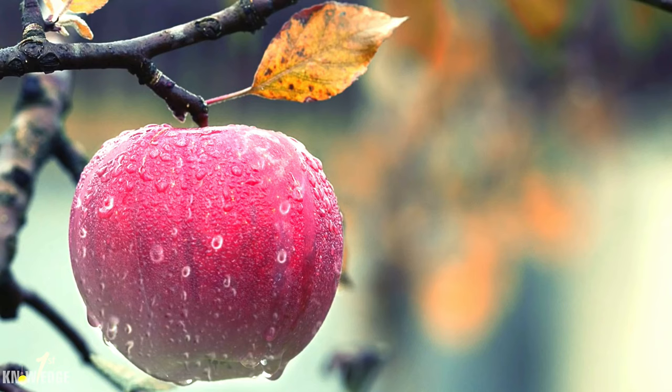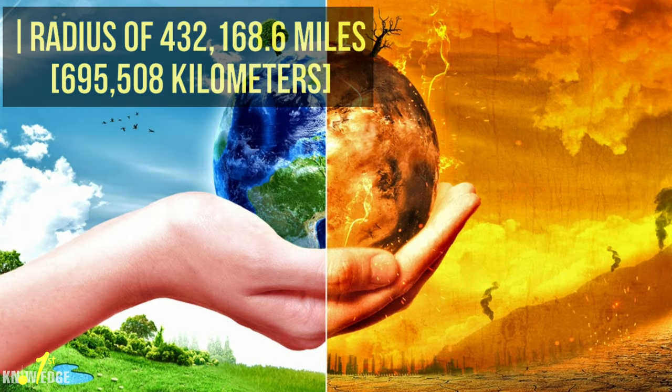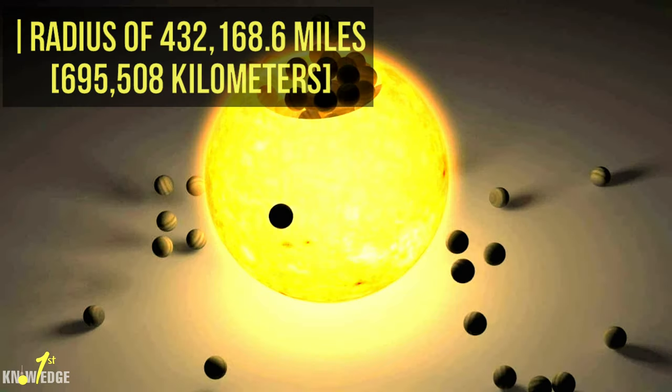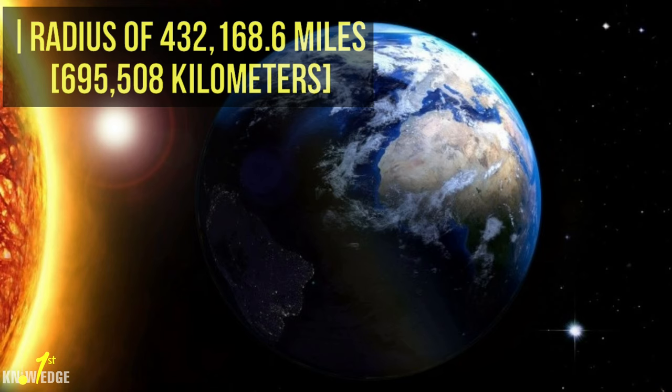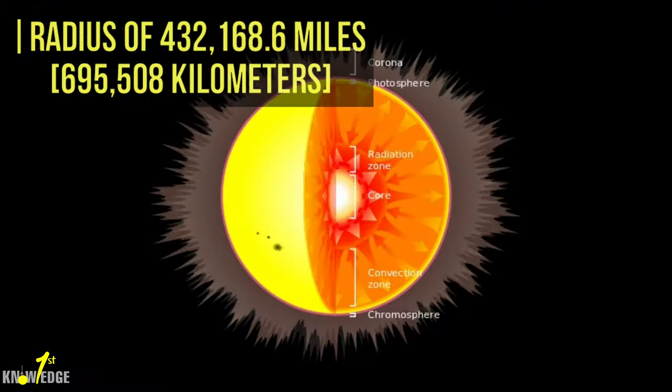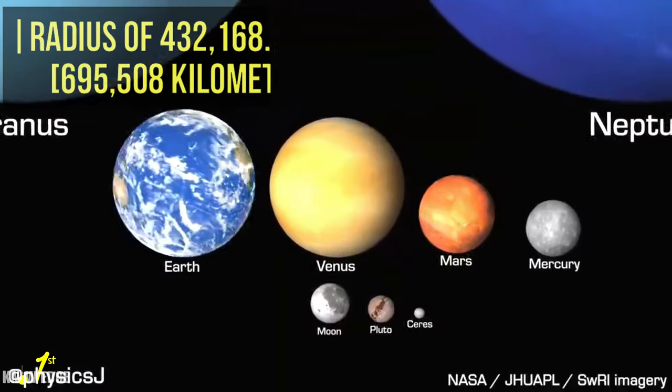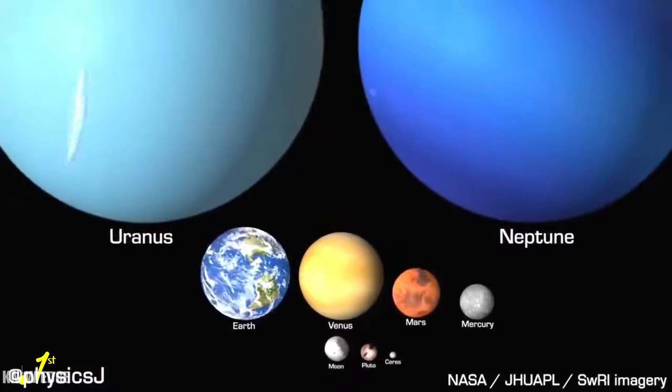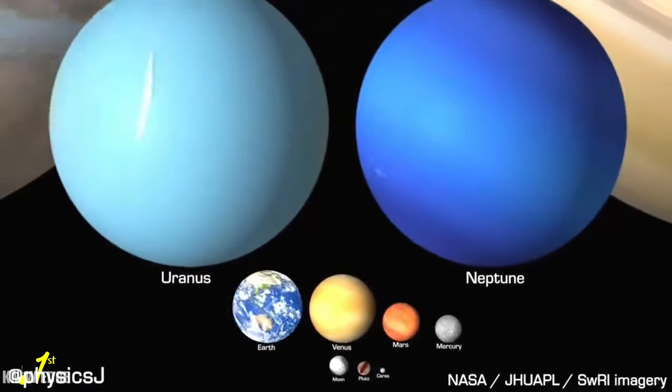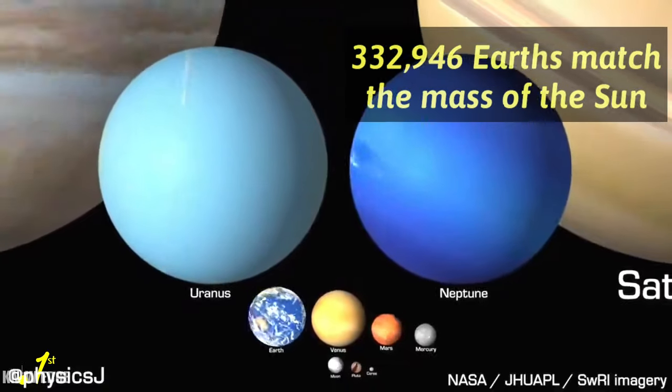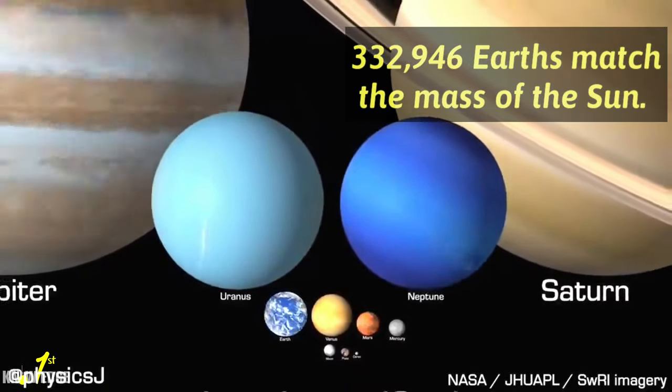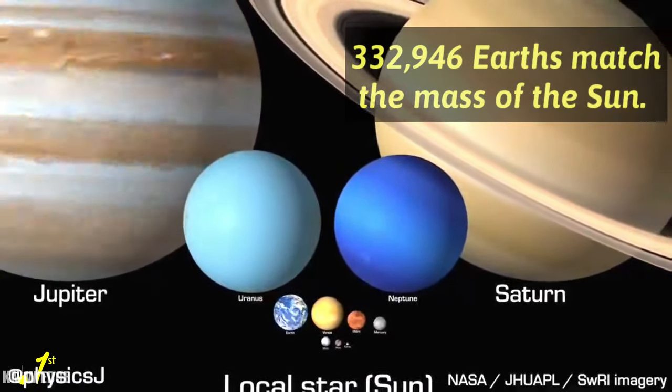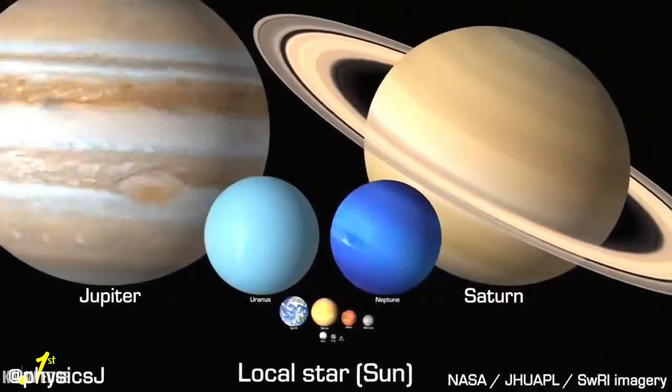With a radius of 432,168.6 miles, our sun is not an especially large star. Many are several times bigger, but it is still far more massive than our home planet. 332,946 Earths match the mass of the sun. The sun's volume would need 1.3 million Earths to fill it.